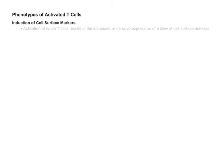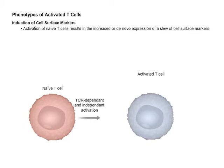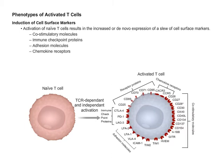In addition to the induction of cytokines, the activation of naive T-cells also results in the increased or de novo expression of a slew of cell surface markers that are listed here. These surface molecules contribute to or regulate T-cell proliferation, differentiation, effector function, and motility.